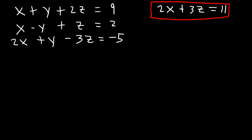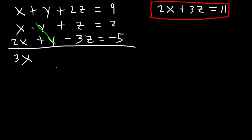Just in case that was confusing: what we need to do is use equation 3 with equation 1 or 2, cancel the same variable y, so we can get another equation in terms of x and z, which we can then combine with the previous equation. So let's use equations 2 and 3. If we add them, the y variables will cancel again. x plus 2x is 3x. z plus negative 3z is negative 2z. And 2 plus negative 5 is negative 3.